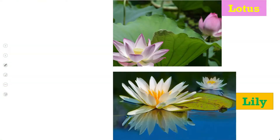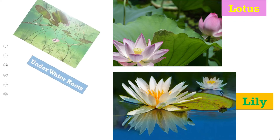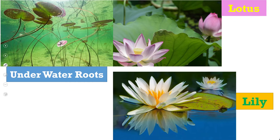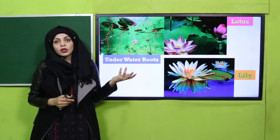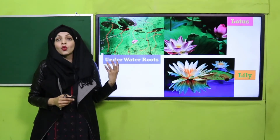Here you can see this is a lotus flower — very brightly colored. This is a water lily. They all grow on the water. Their roots grow below the water. There is no sand or mud — still the roots grow inside the water. These are the adaptations of water lily and lotus flowers which grow on top of the water.